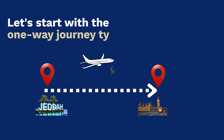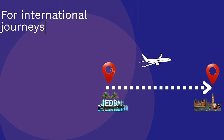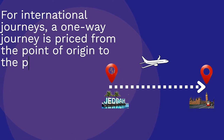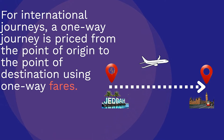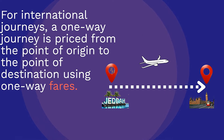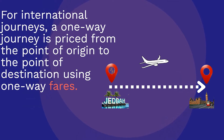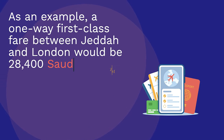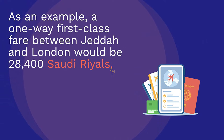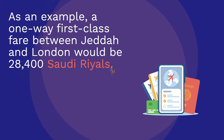Let's start with the one-way journey type. For international journeys, a one-way journey is priced from the point of origin to the point of destination using one-way fares. As an example, a one-way first-class fare between Jeddah and London would be 28,400 Saudi Riyals.